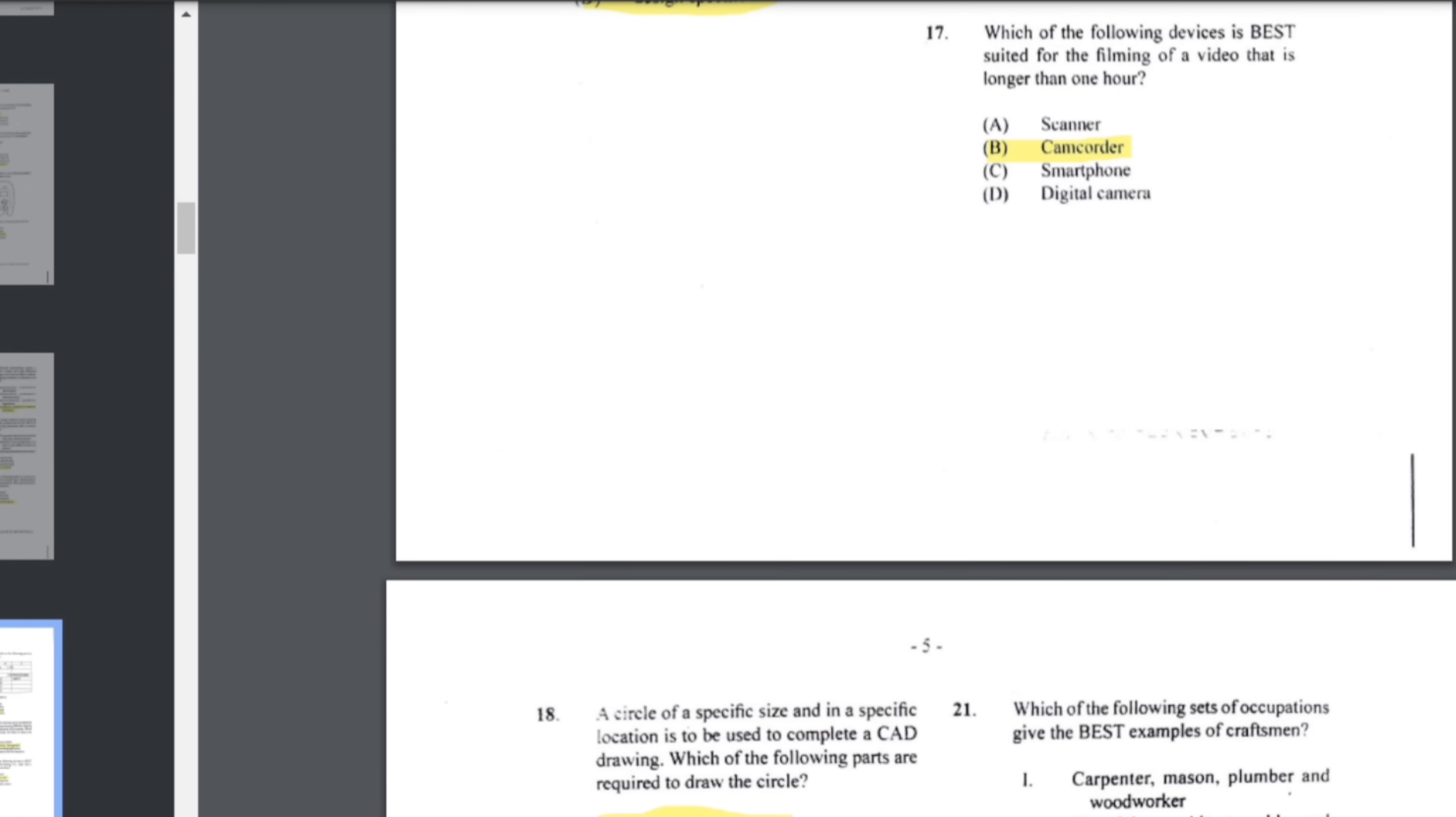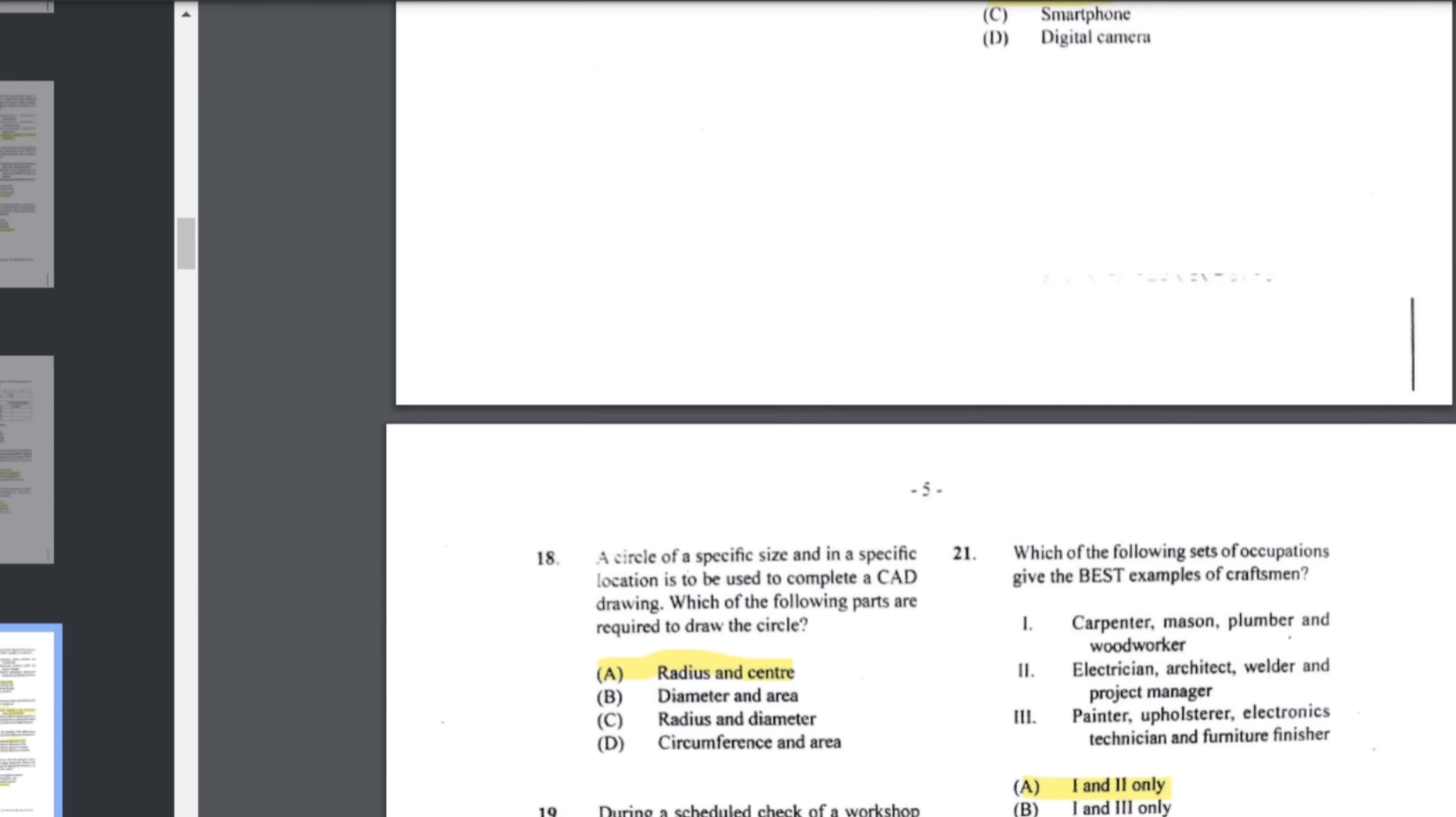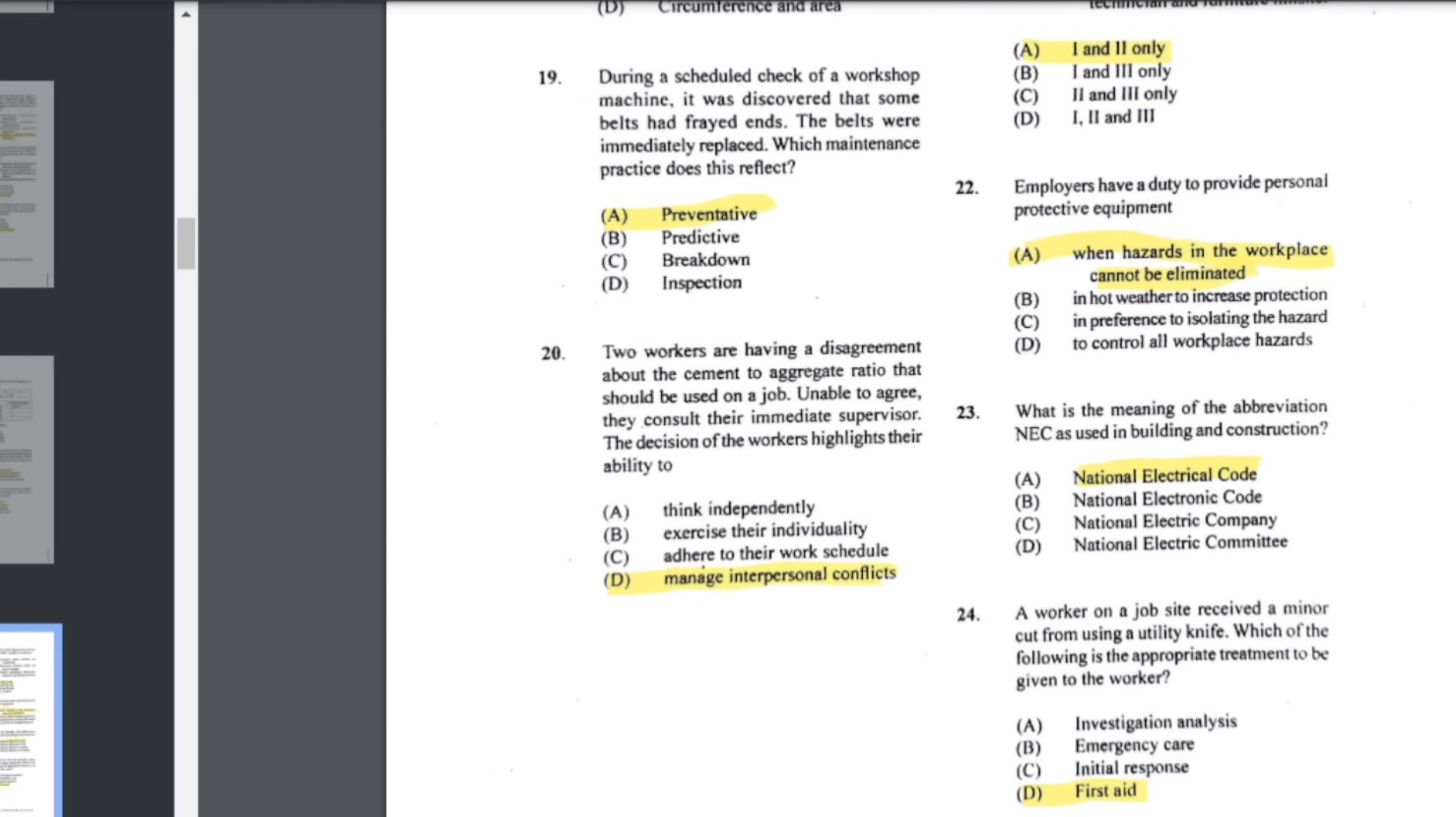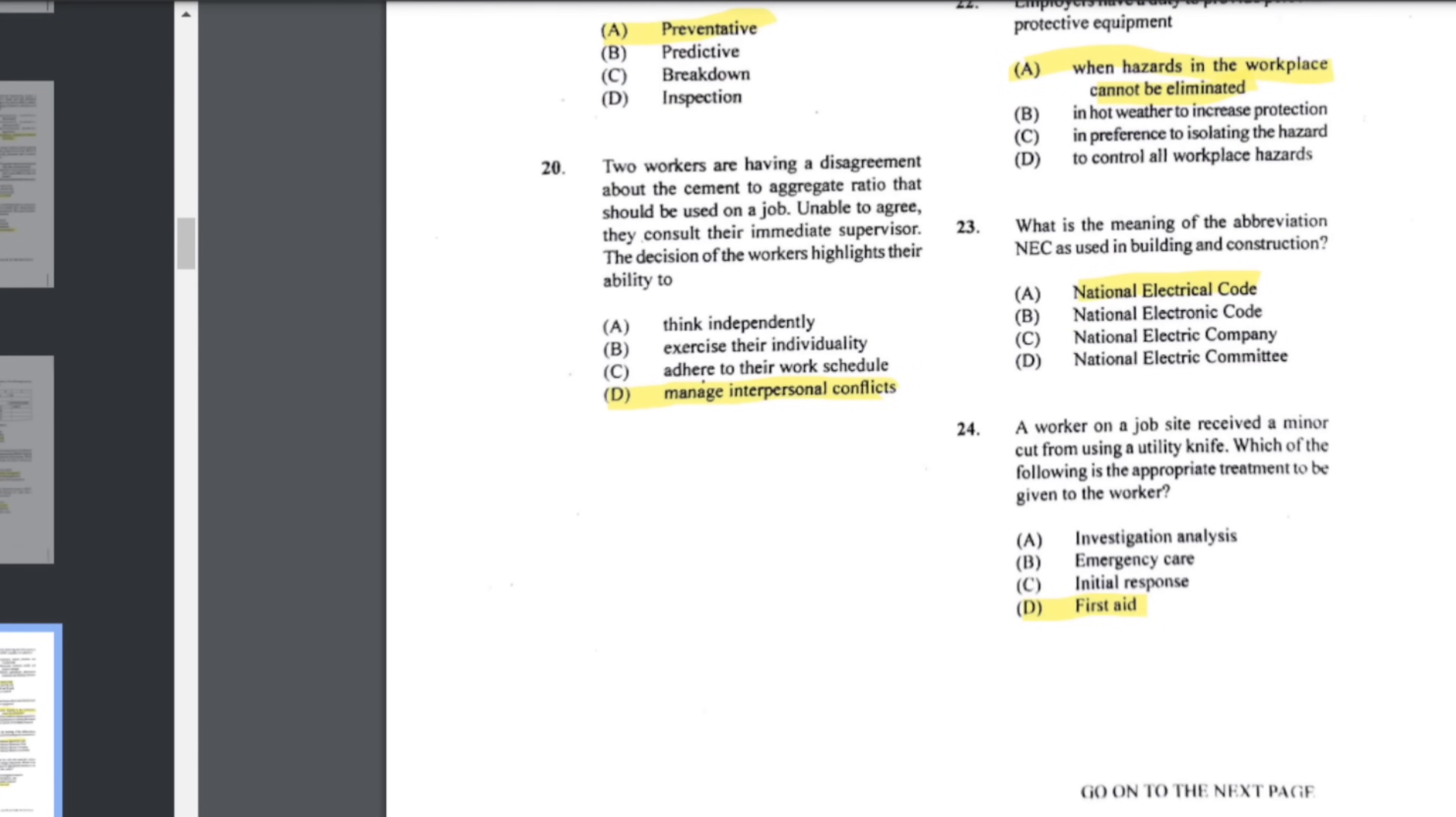Number 17: which of the following devices is best suited for the filming of a video that is longer than one hour? In this case we can use a camcorder. Number 18: a circle of a specific size and in a specific location is to be used to complete a CAD drawing. Which of the following parts are required to draw the circle? That would be center and radius. Number 19: during a scheduled check of a workshop machine, it was discovered that some belts had frayed ends. The belts were immediately replaced. Which maintenance practice does this reflect? This would be preventative, trying to prevent something from happening before it even happens.